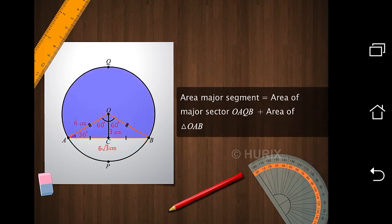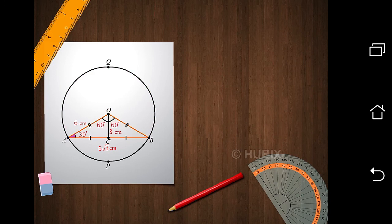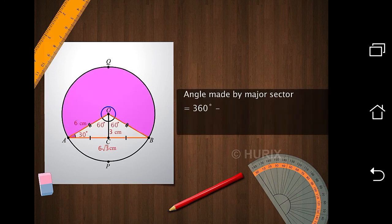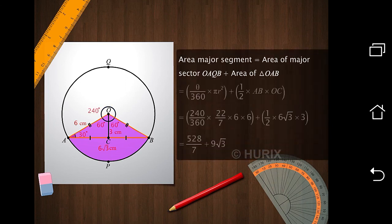Similarly, let's find the area of the major segment by adding the area of the major sector and triangle OAB. To find the angle made by the major sector AQB, we subtract the measure of the angle made by the minor sector from 360 degrees. Next, we put in the values in the formulae for the area of the sector and the area of the triangle, then simplify to find the area of the major segment.